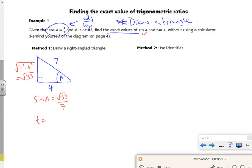And tan A is the opposite which is root 33 over the adjacent which is 4. Now this is the way I use, this is by far to me the easiest way. Maybe it was just the fact that that's what I was taught.